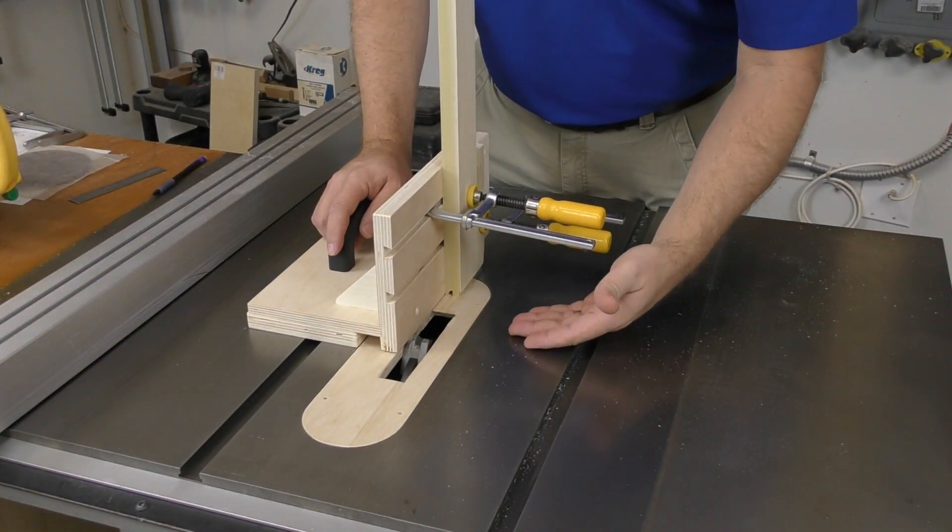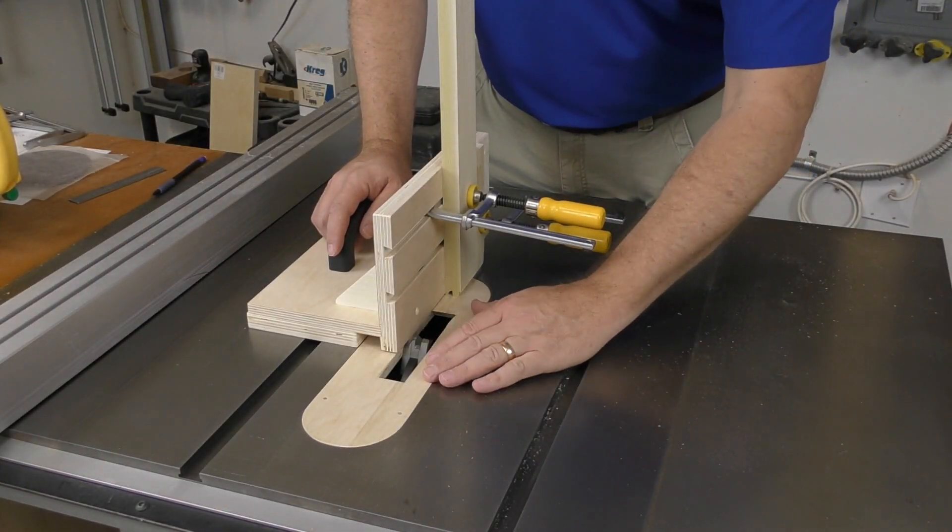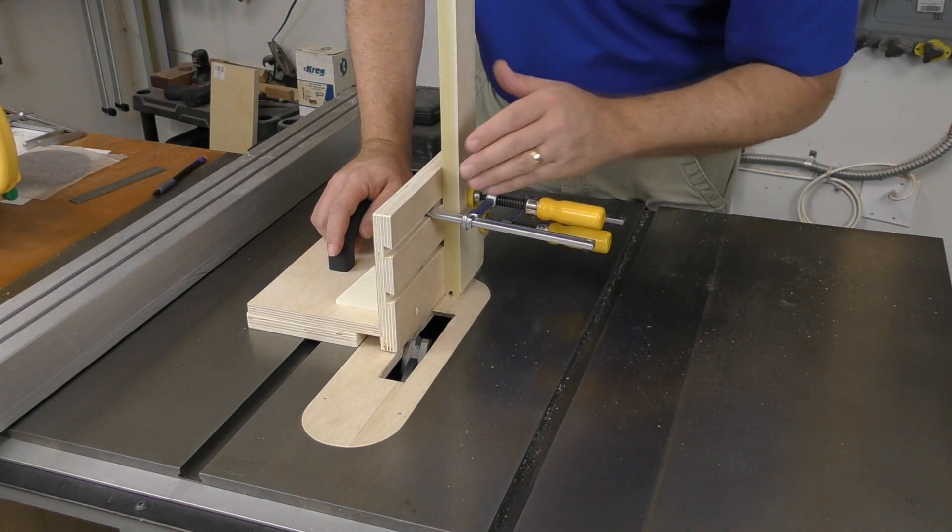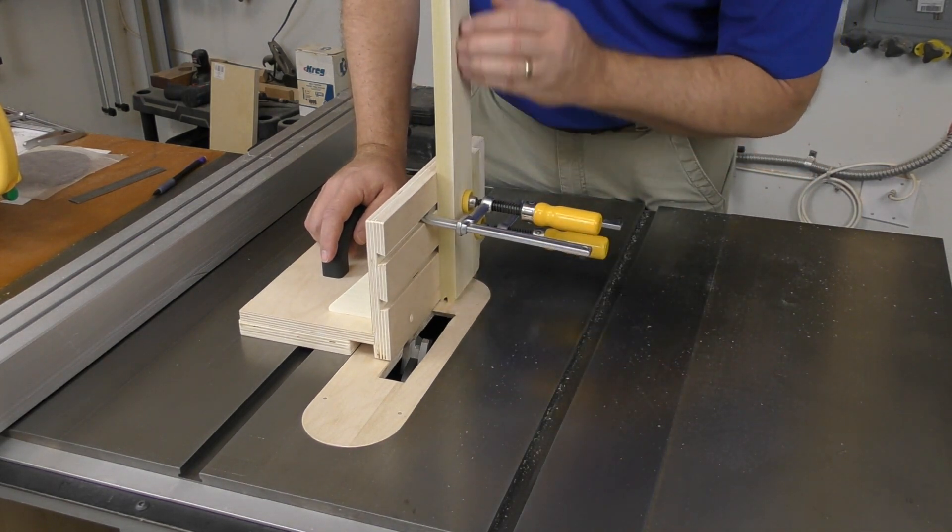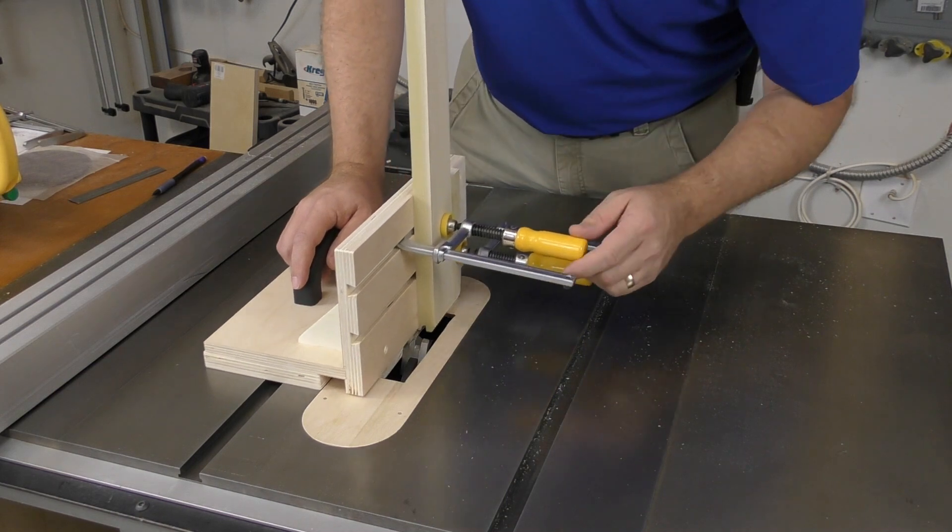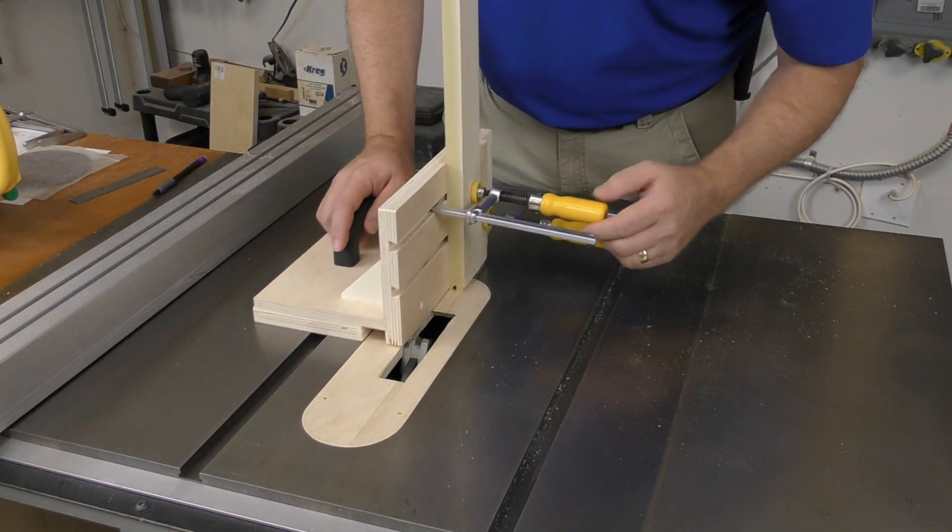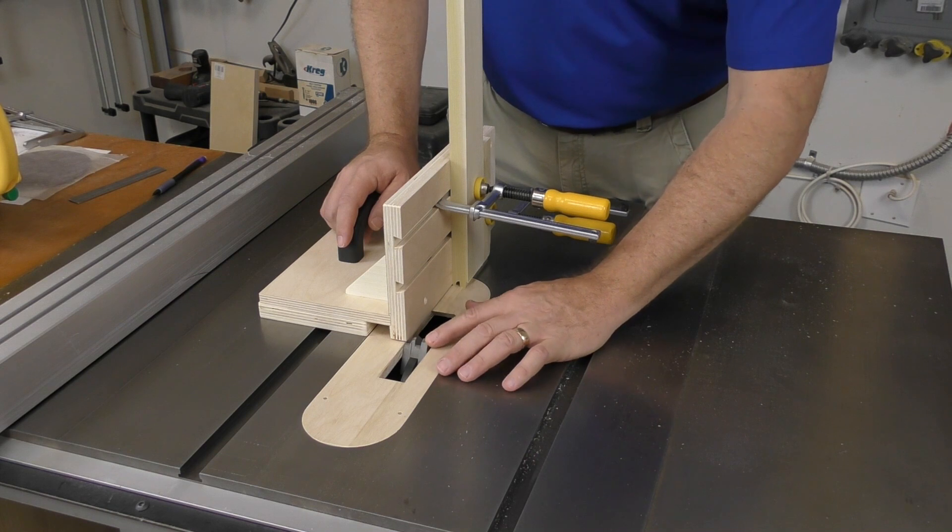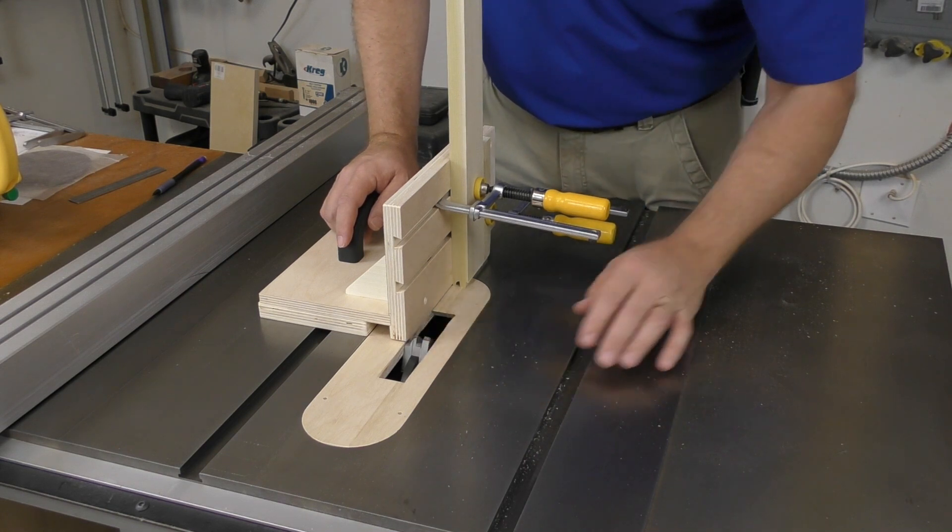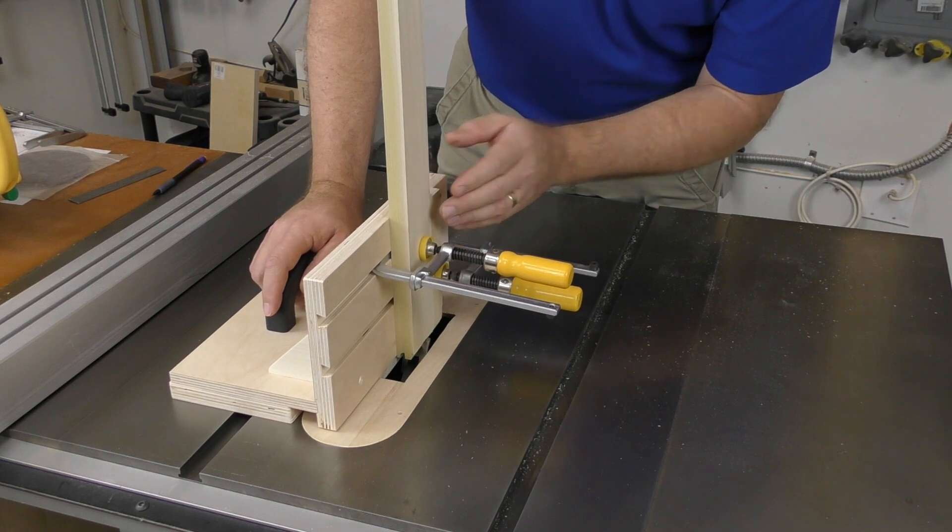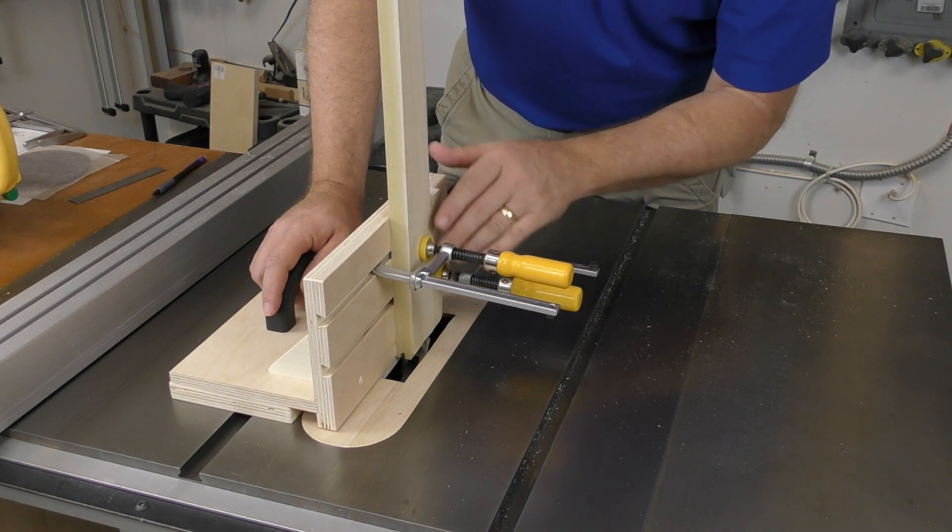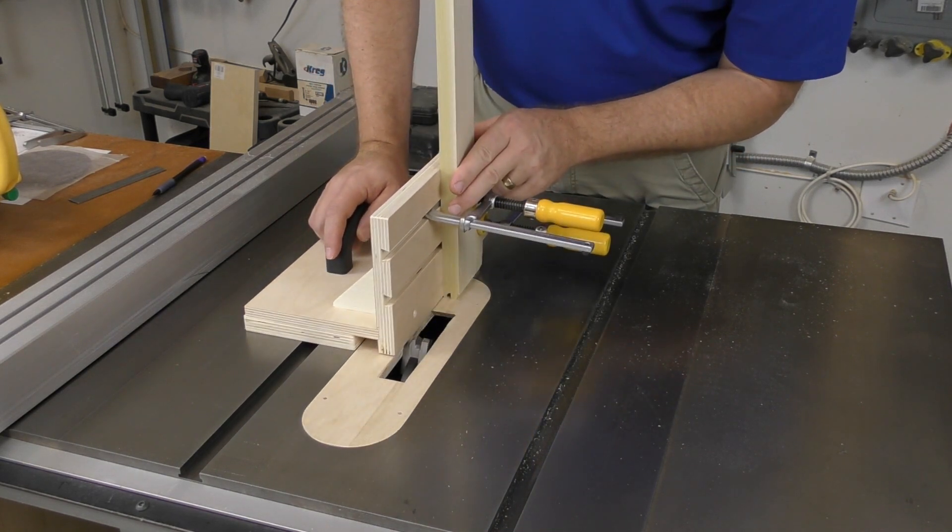Now, while I'm calling this a tenoning jig, and it certainly can be used with a blade for tenoning, I actually created it in order to cope the ends of these stile and rail doors using the molding head on my table saw. This molding head is from Korob Cutters, and it's important when using the molding head to make the stile and rail doors.